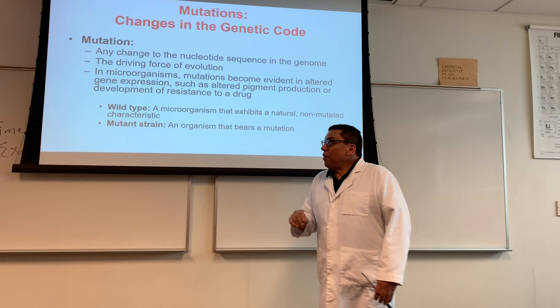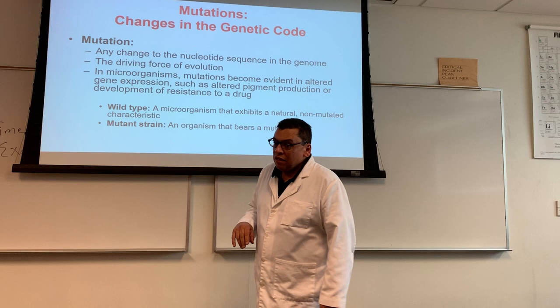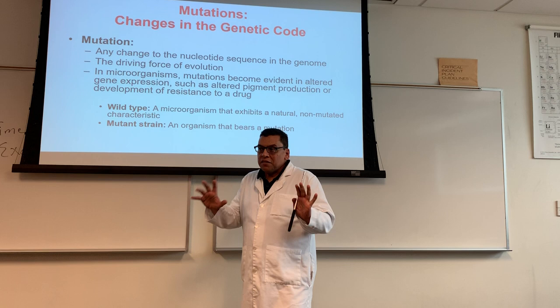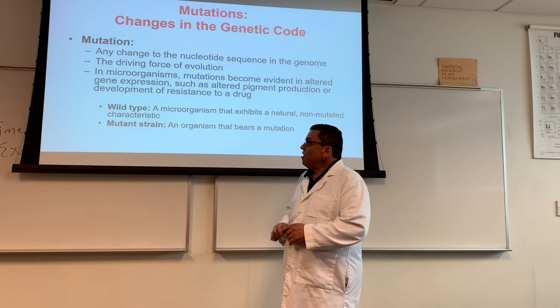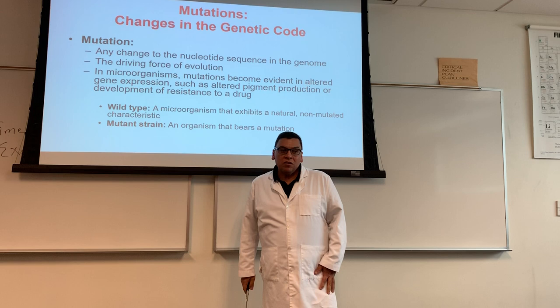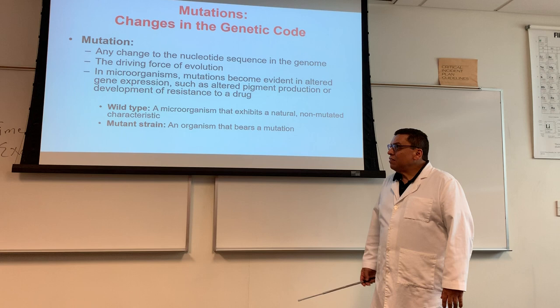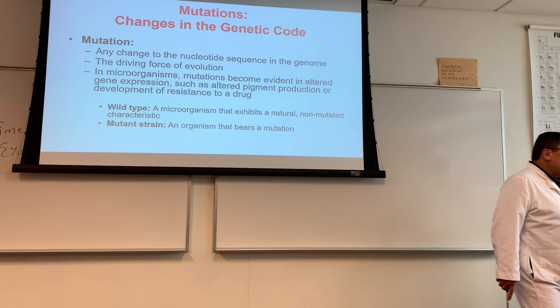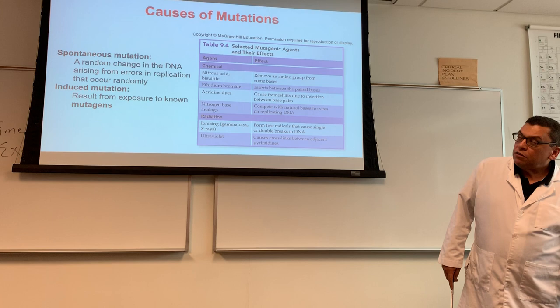An organism that has the correct sequence of a gene is said to be the wild-type organism. So the sequence is the right sequence — it's the one that works, it's the wild-type strain. But if you have a mutation in that DNA, then you become the mutant strain. A microorganism with a change in the gene is now referred to as the mutant strain.